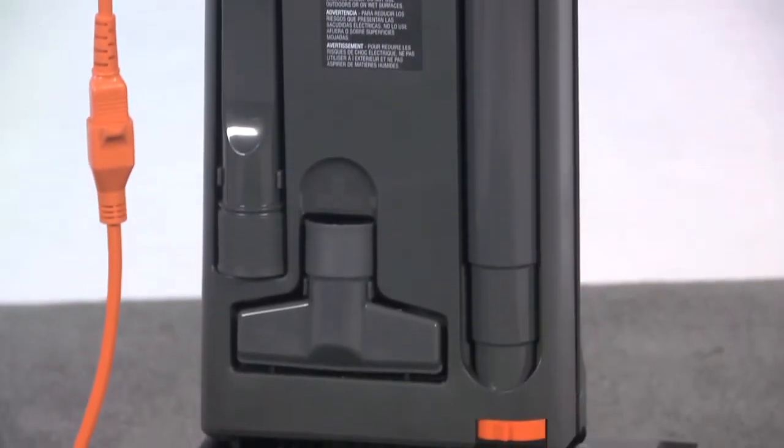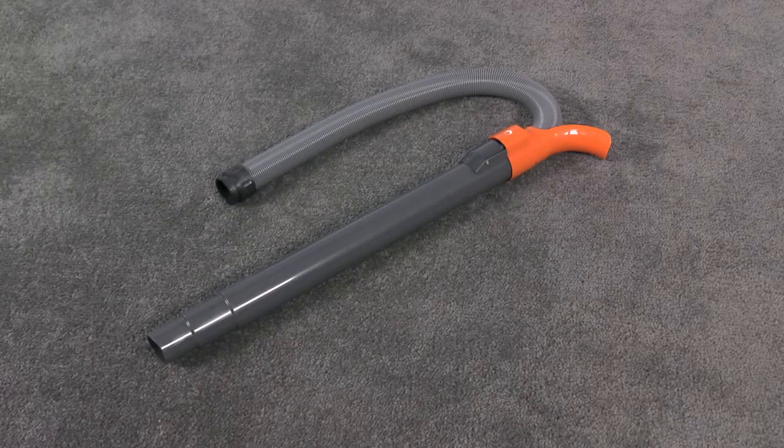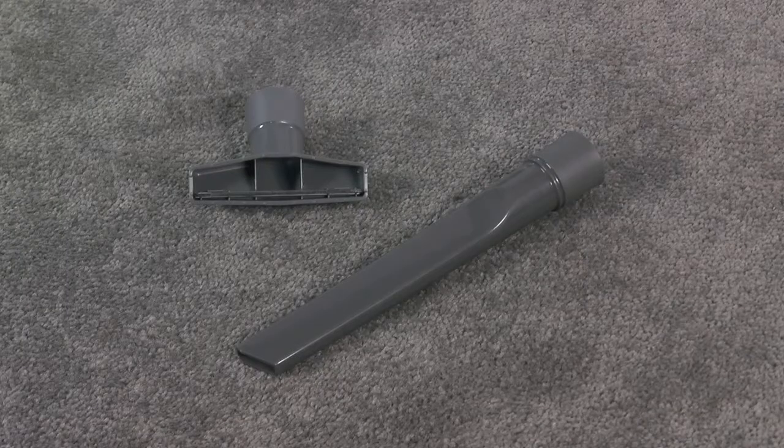Tool attachments are stored neatly on board and include a combination stretch hose, wand, and handle grip, upholstery tool, and crevice tool.